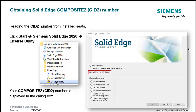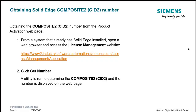The first method is reading the CID 2 number from installed seats — you can read the CID 2 number right underneath the license server information. The second method is getting the number from the product activation web page. From a system that already has Solid Edge installed, open a web browser and access the license management website using the link shown. Click Get Number, and the utility will run to determine the Composite 2 — the number is then displayed on the web page.